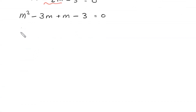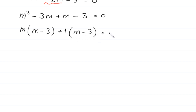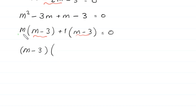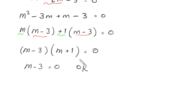From the first two terms we factor out m, leaving m minus 3. From the last two terms we factor out plus 1, leaving m minus 3. So m minus 3 is a common factor, giving us (m minus 3)(m plus 1) equals 0. Therefore either m minus 3 equals 0, giving m equals 3, or m plus 1 equals 0, giving m equals negative 1.